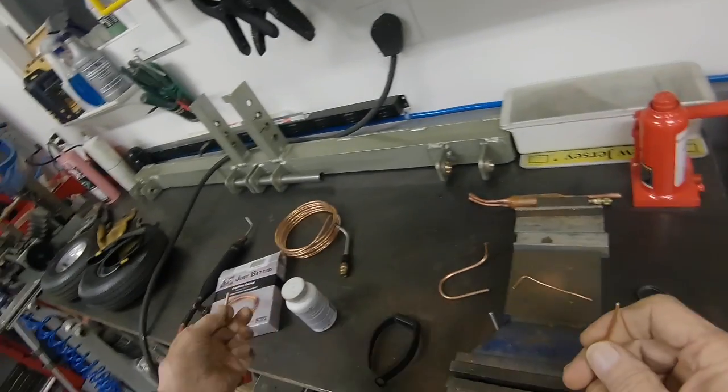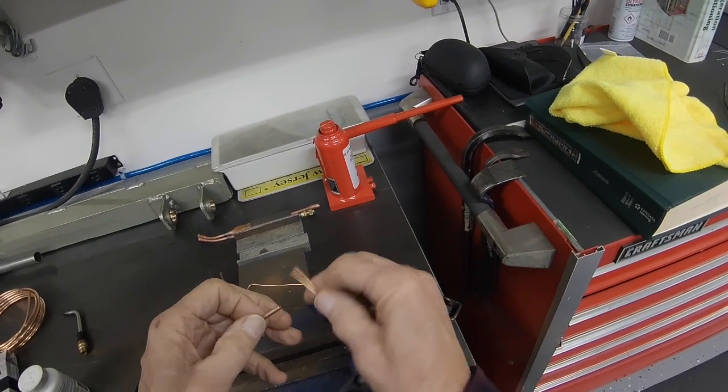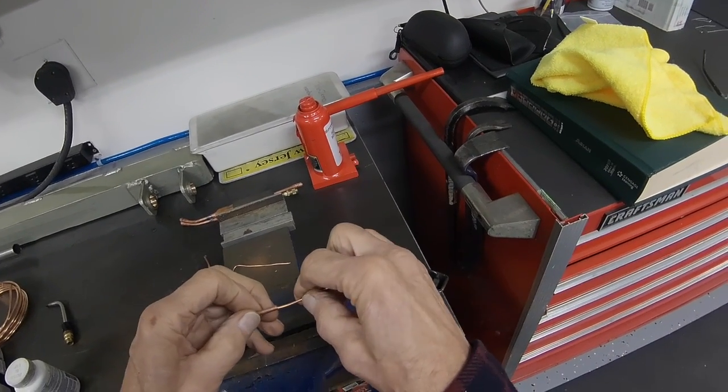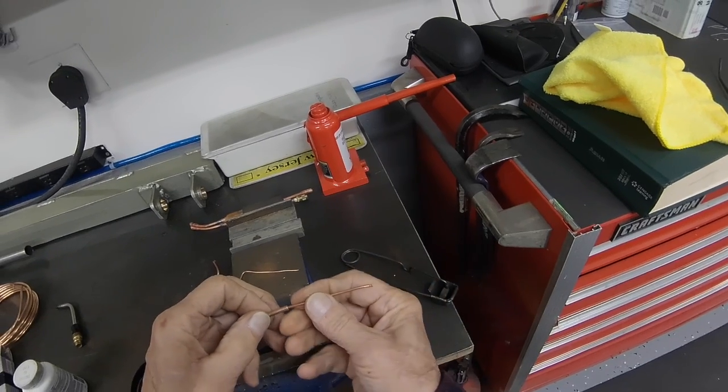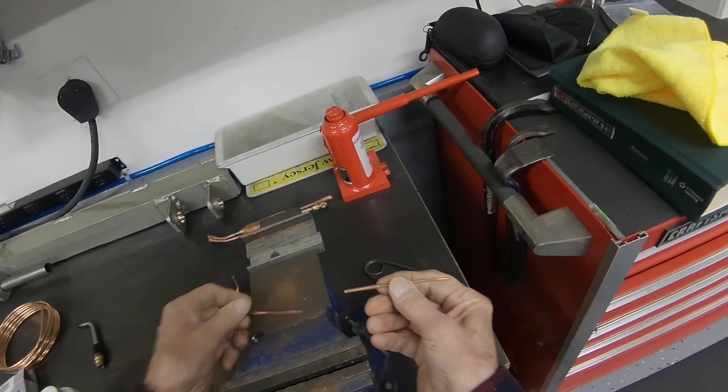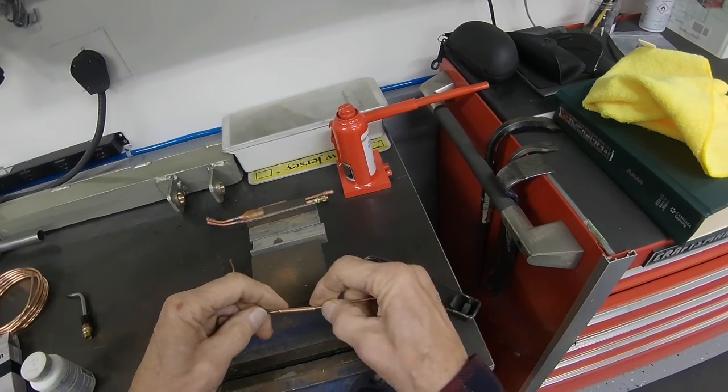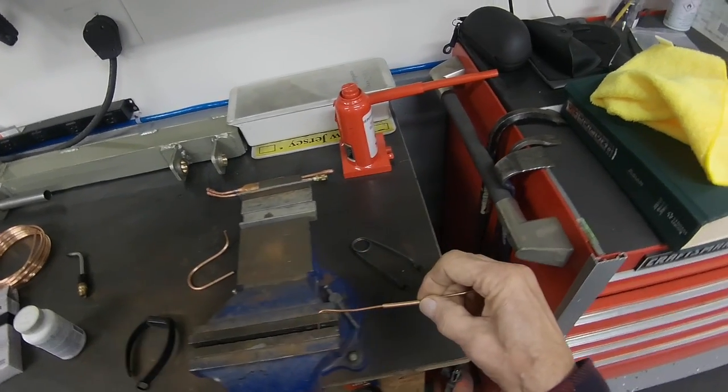So I took a little piece of that 100 thousandths ID tubing and put it together like this. Make it long enough so that you can at least have maybe a half an inch to an inch on each side. And then you would put these two together and then solder them.